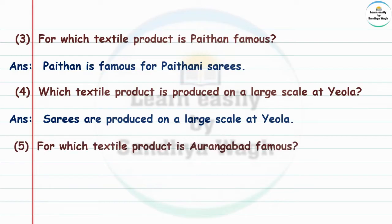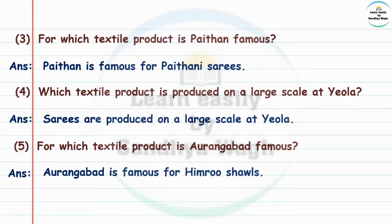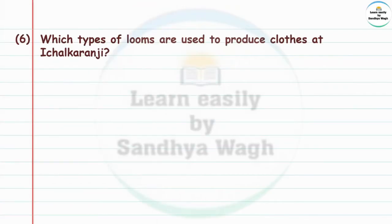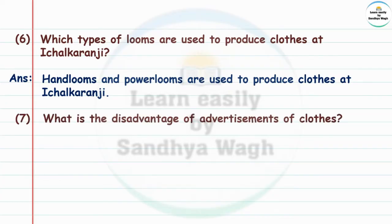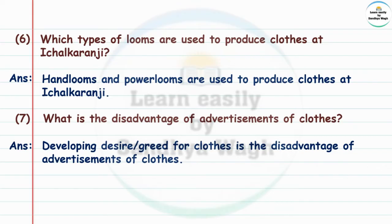For which textile product is Aurangabad famous? Answer: Aurangabad is famous for Himroo shawls. Which types of looms are used to produce clothes at Yevla and Ichalkaranji? Answer: Hand looms and power looms are used to produce clothes at Yevla and Ichalkaranji. What is the disadvantage of advertisements of clothes? Answer: Developing desire or greed for clothes is the disadvantage of advertisements of clothes.